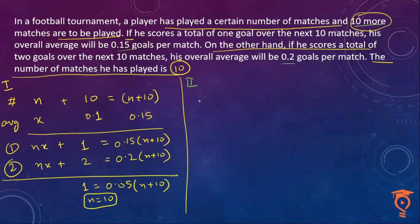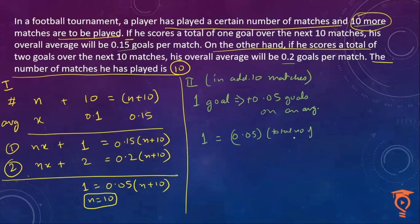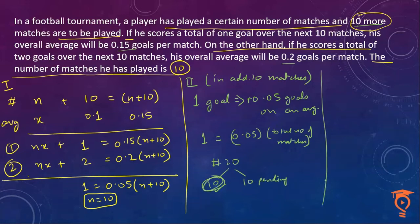So just from the replacement of these 10 matches, a difference of one goal in the additional 10 matches brings a difference of 0.05 goals on average. One goal total, average difference is 0.05, so total number of matches including the 10 additional = 20, which means 10 already done and 10 pending — so the answer is 10. The only two steps you had to write were those, and you would have got the answer.